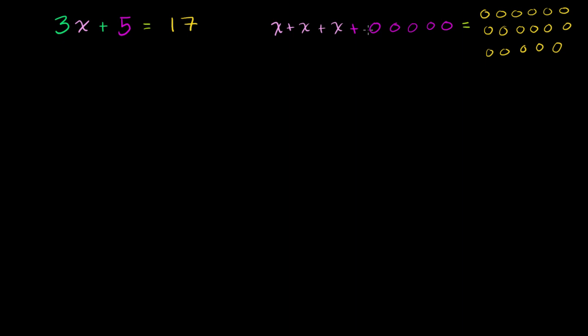You would literally get rid of these five objects. One, two, three, four, five. But like I said, if the original thing was equal to the original thing on the right, if we get rid of five objects from the left-hand side, we have to get rid of five objects from the right-hand side. So we have to do it here too. One, two, three, four, five.